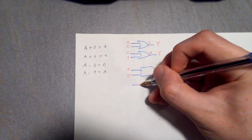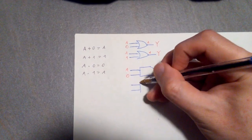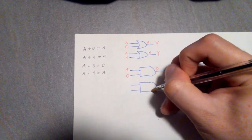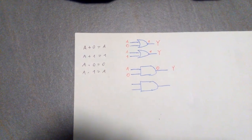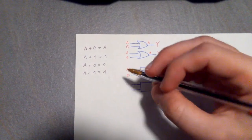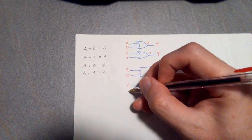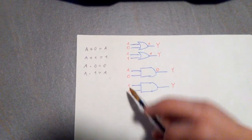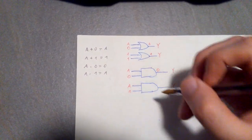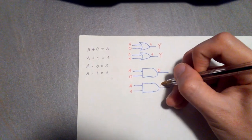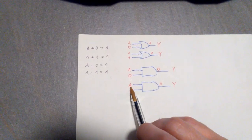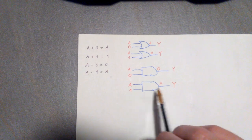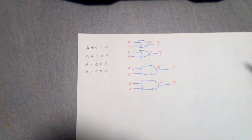And this one basically means that if we have the output Y and we have two inputs, one is A, the other one is 1, then the output is always going to be A because if A is 0, then it's going to be 0; if A is 1, that's going to be 1 because it's an AND gate.